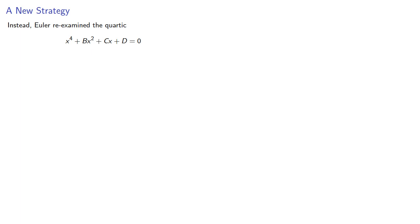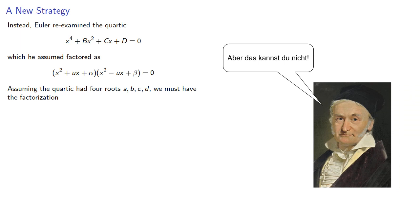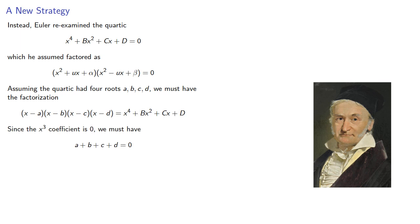So instead, Euler reexamined the quartic, which he assumed factored as shown. Assuming the quartic had four roots a, b, c, and d, we must have the factorization. And since the x cubed coefficient is zero, the sum of a, b, c, and d must be zero.